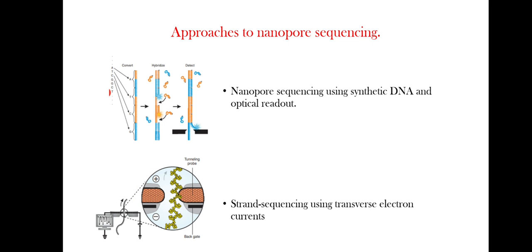The fourth and last approach is strand sequencing using transverse electron current. The amplitude of the tunneling current that traverses through the nucleotide is expected to differentiate each nucleobase as the DNA is electrophoretically driven through the pore. This is the end of the video. Thank you.